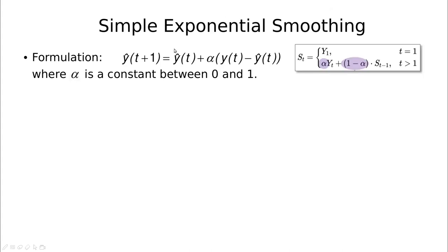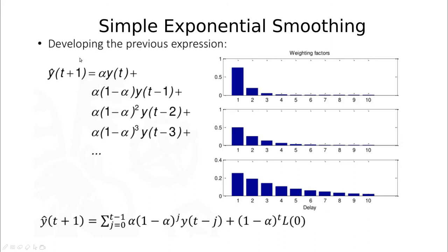Here is the same formula expressed in a slightly different, more intuitive way. ŷ_hat is the same as the previous history, and 1 minus alpha comes in differently. Basically, we're saying the new series value is the last one plus a correction — the difference between what I expected and what I observed. If you want to create a new series at time t+1, by the formula this is alpha times the last observation plus (1 minus alpha) times the previous one.